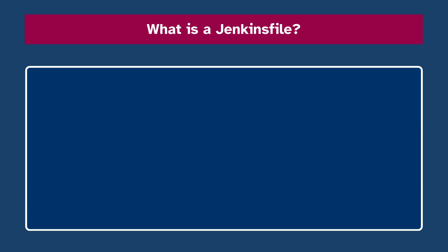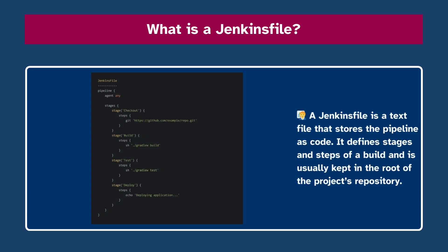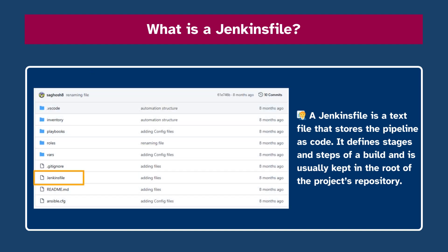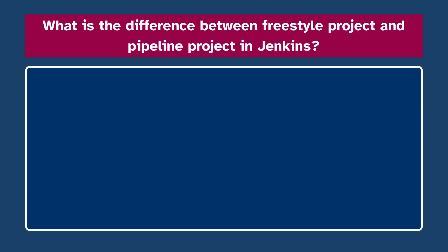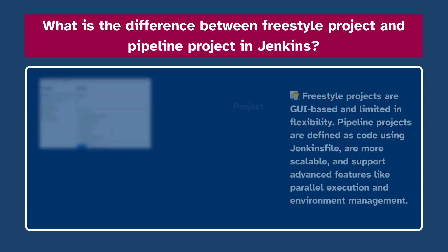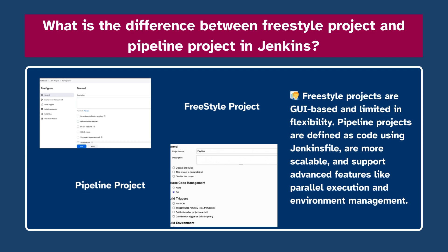Number eleven: What is a Jenkinsfile? A Jenkinsfile is a text file that stores the pipeline as code. It defines stages and steps of a build and is usually kept in the root of the project's repository. Number twelve: What is the difference between a freestyle project and a pipeline project in Jenkins? Freestyle projects are GUI-based and limited in flexibility. Pipeline projects are defined as code using a Jenkinsfile and are more scalable, supporting advanced features.